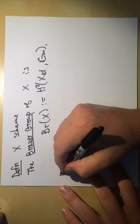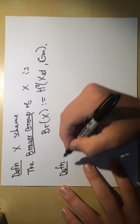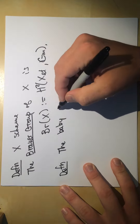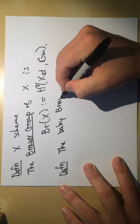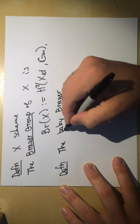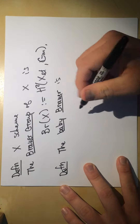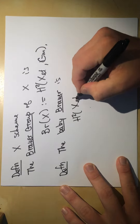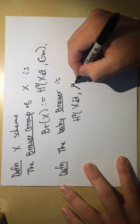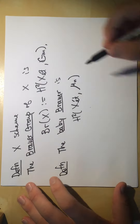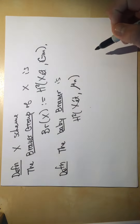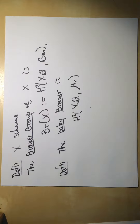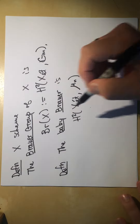Now what I really wanted to talk about is the baby Brauer group. Definition: the baby Brauer group — this is non-standard terminology — is H²(X, μₙ), where μₙ is the group of nth roots of unity.